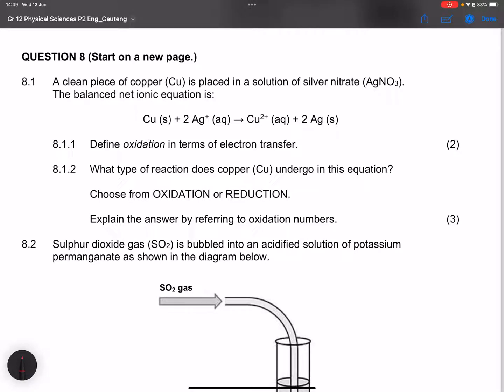A clean piece of copper is placed in a solution with silver nitrate. The balanced net ionic equation is given. They say define oxidation in terms of electron transfer. So remember what is oxidation? It is the loss of electrons. That is the loss of electrons.